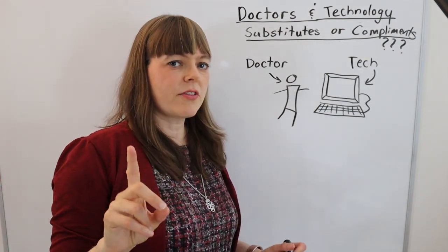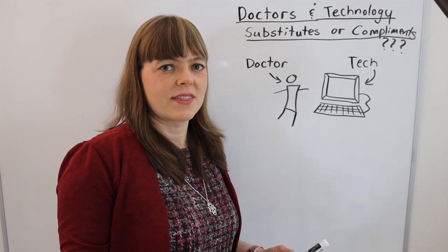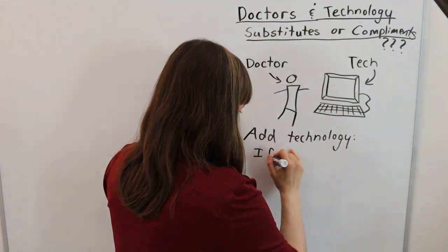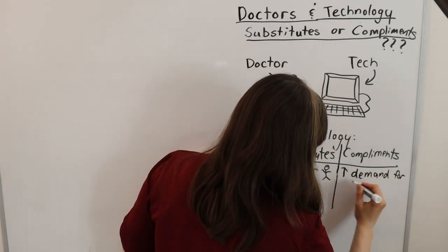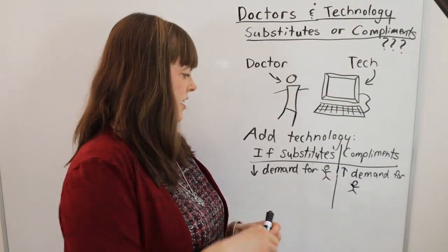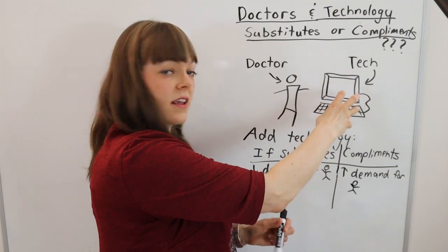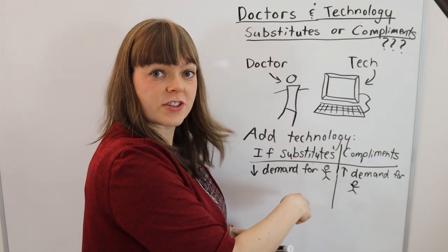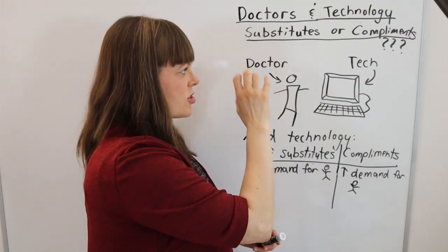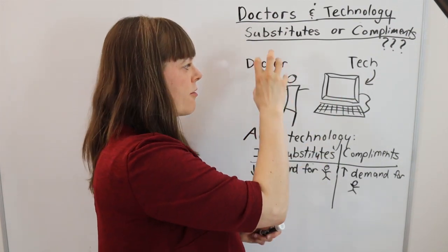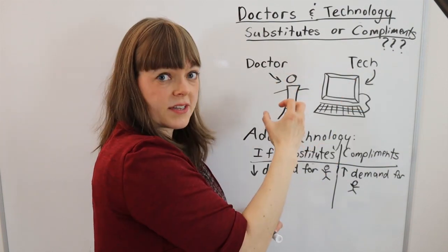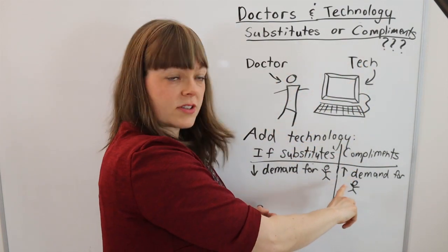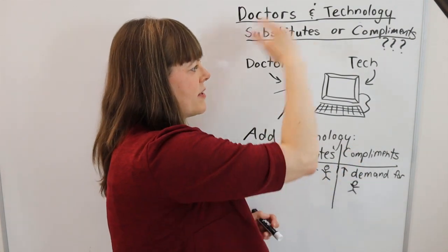So let me do a table that would capture the normal way we would think about substitutes and complements here. In a normal situation, if you add technology and that leads to a decrease in the demand for doctors, then that means these are substitutes. People are switching their behavior from going to the doctor to the technology. If you add technology and that increases the demand for doctors, that means they're complements.